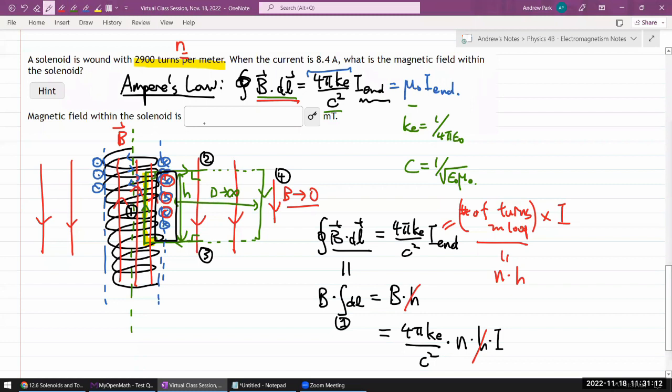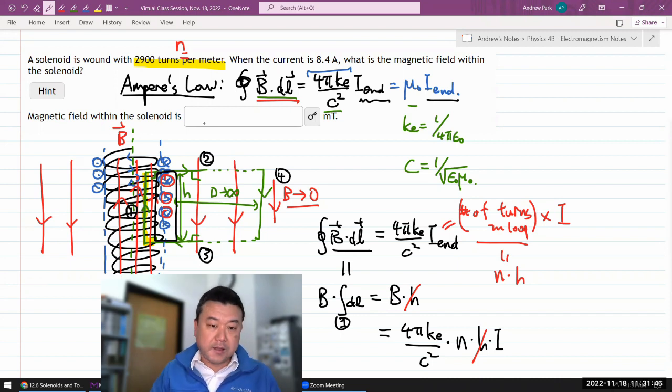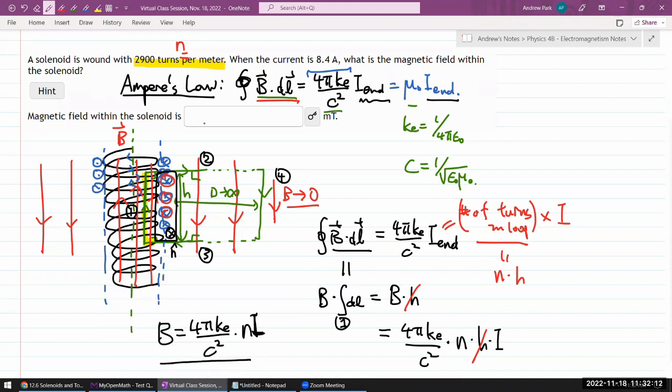And just for the sake of avoiding sign error, or making sure the signs are what they're supposed to be: when you're counting the current enclosed, whenever the current goes in the same direction as N hat, it's positive. And here, the way you figure out N hat is, okay, I got my Amperian loop going clockwise this way, direction of my thumb. That's my direction of the area element or the surface area that's going into the page. So here, my N hat is into the page. That's in the same direction as the direction of current, so it's positive.